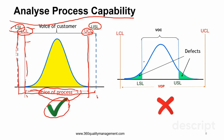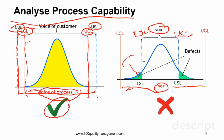In another scenario, the voice of the process variation or spread is very big — bigger than the voice of the customer. Therefore, anything beyond the specs, the LSL and USL, will be considered a defect. This type of process is not desirable in any manufacturing process because the potential for producing defects is very high and there will definitely be defects.